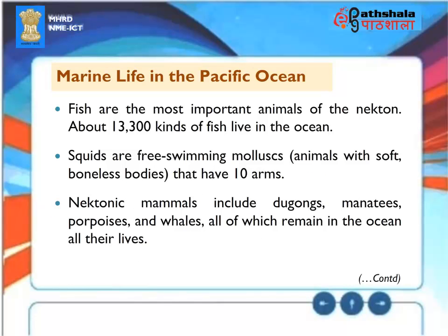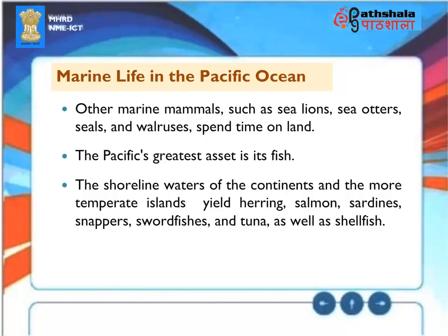Marine Life in the Pacific Ocean: Fish are the most important animals of the nekton — about 13,300 kinds of fish live in the ocean. Squids are free-swimming mollusks with ten arms. Nektonic mammals include dugongs, manatees, porpoises, and whales, which remain in the ocean all their lives. Other marine mammals such as sea lions, sea otters, seals, and walruses spend time on land. The Pacific's greatest asset is its fish; the shoreline waters yield herring, salmon, sardines, snappers, swordfish, and tuna, as well as shellfish.